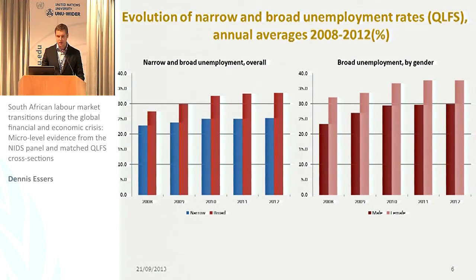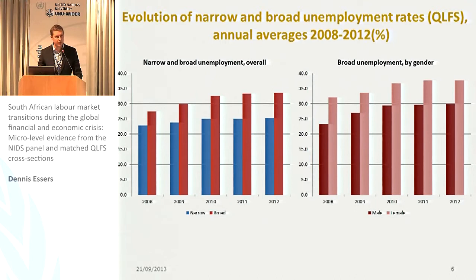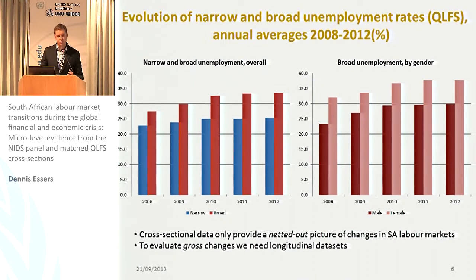This illustrates the importance of the unemployment rate in South Africa. During the crisis, narrow unemployment rose slightly, but there was a much greater increase in broad unemployment. Focusing on broad unemployment, we see a number of group differences. For example, comparing males with females, females have higher broad unemployment, but the gap diminished during the crisis — so males were apparently hit harder. This kind of cross-sectional data only provides a very limited picture of changes in South African labor markets.